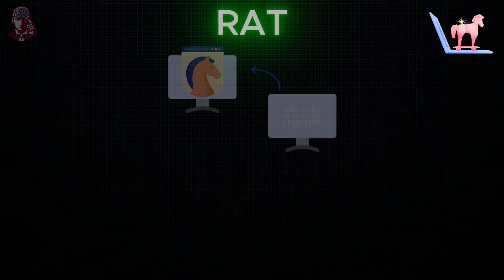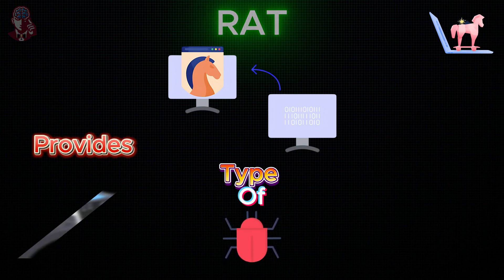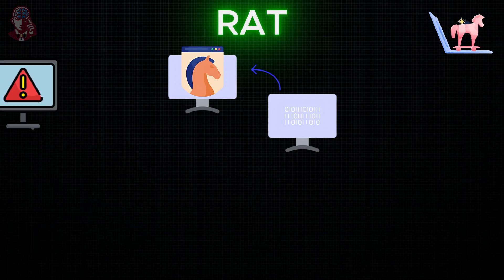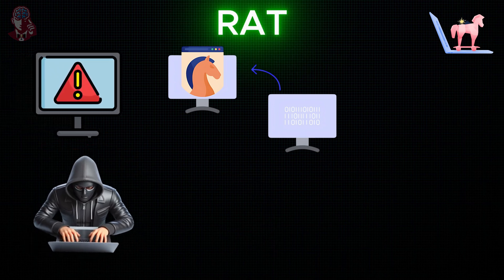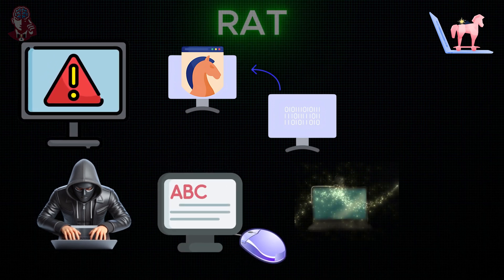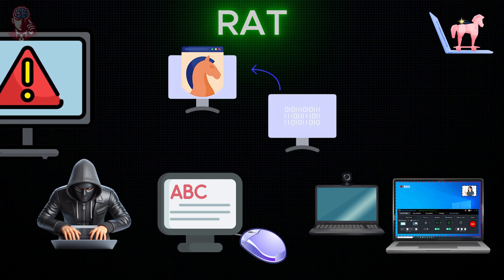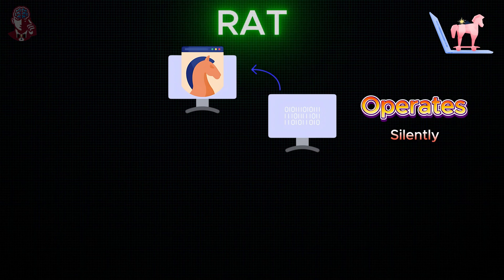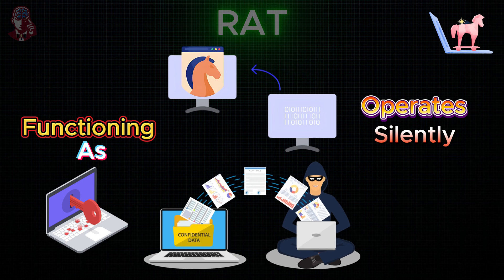RAT (Remote Access Trojan): A RAT is a type of malware that provides remote control of a computer via the internet. Once a computer is infected, the attacker can control the mouse and keyboard, access the webcam and record activity, and monitor user actions such as keystrokes. Most of the time, a RAT operates silently, primarily functioning as a keylogger to steal personal information.